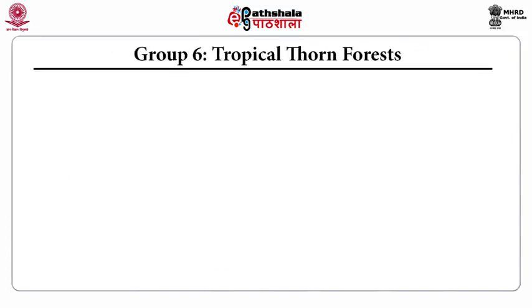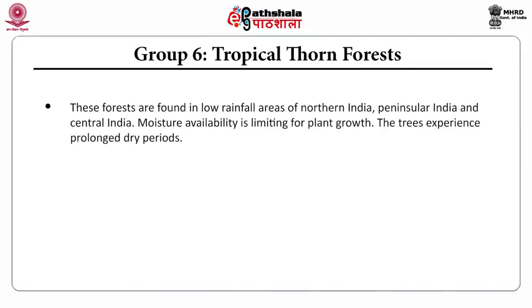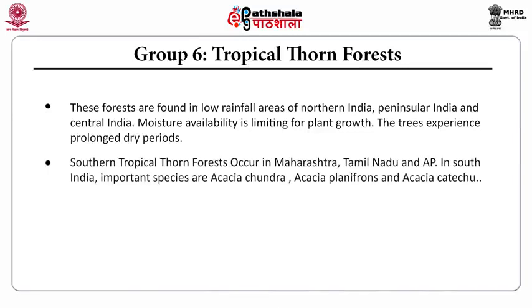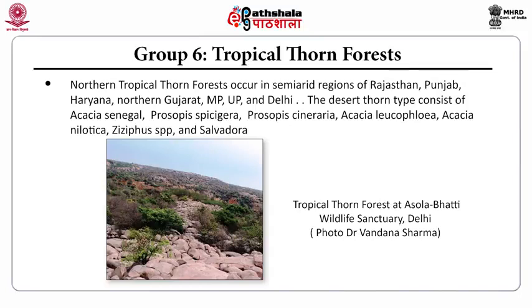Group 6 is the tropical thorn forest. These forests are found in low rainfall areas of northern India, peninsular India, and central India. Moisture availability is limiting for plant growth and the trees experience prolonged dry periods. The southern tropical thorn forests occur in Maharashtra, Tamil Nadu, and Andhra Pradesh. Important species in South India are Acacia chundra, Acacia planifrons, and Acacia catechu. The northern tropical thorn forests occur in semi-arid regions of Rajasthan, Punjab, Haryana, northern Gujarat, MP, UP, and Delhi. The desert thorn type consists of Acacia senegal, Prosopis juliflora, Prosopis cineraria, Acacia leucophloea, Acacia nilotica, Ziziphus species, and Salvadora species.